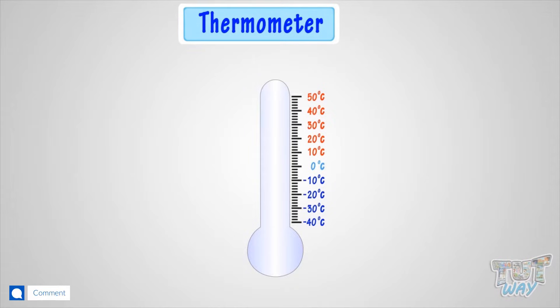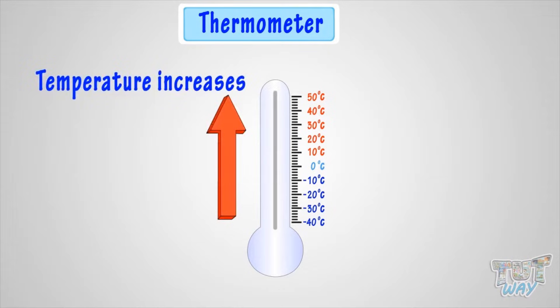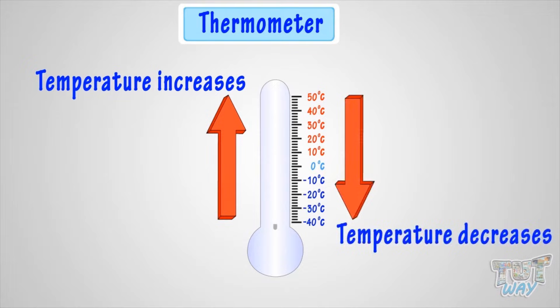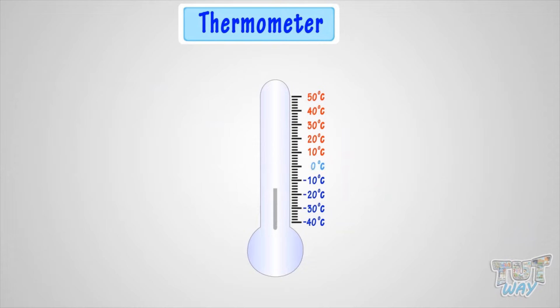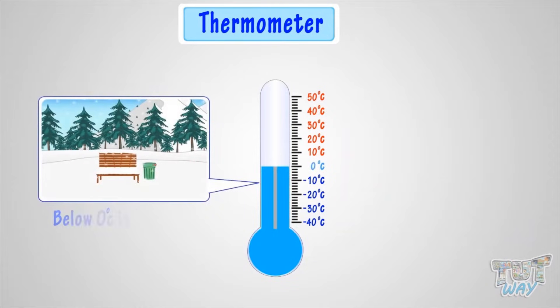The line goes up if the temperature rises, and the line goes down if the temperature decreases. Below zero degrees Celsius, or temperature in minus, is very, very cold, or ice cold.